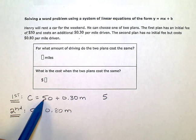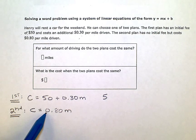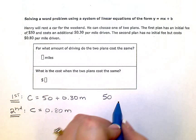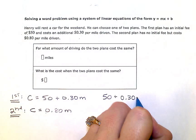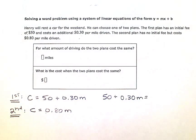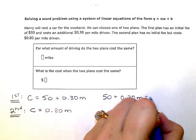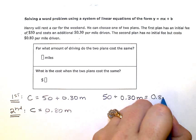I want to know when the first plan is equal to the cost of the second plan. So 50 plus 0.3 m, I want to know when that is equal to 0.80 m.